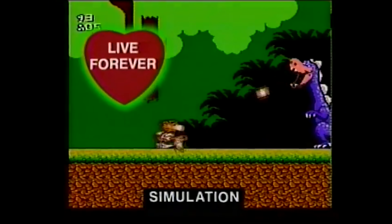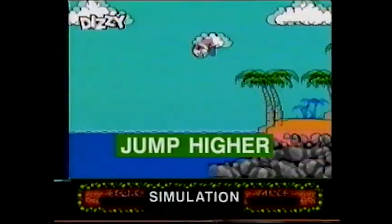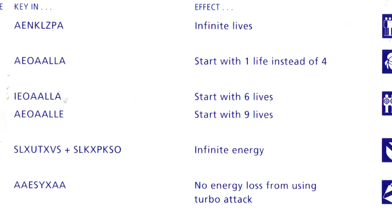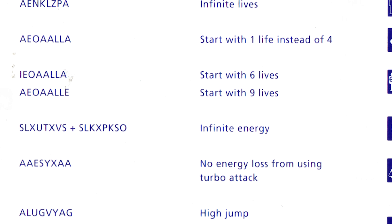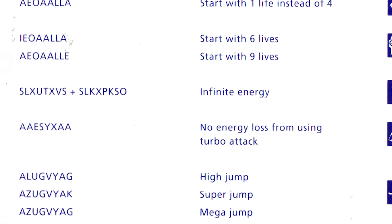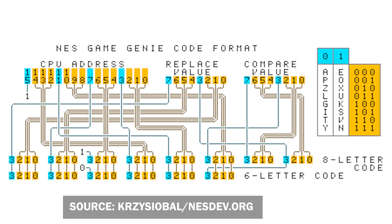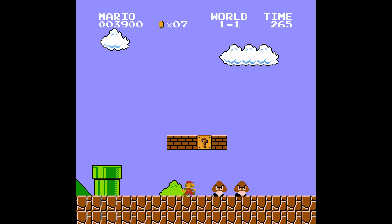Given a specific Game Genie code, it translates to a memory location and a data value. The device works by intercepting CPU reads and replacing the game cart's response with its own based on that memory location. For example, if you know the memory location for the number of lives in Super Mario Bros. and you know it to be the value of 3, the Game Genie can intercept the code that decreases lives when you die to perform a different operation. I've tried to follow along with how Game Genie codes work before and just got confused, but I've spent some time to finally understand it.